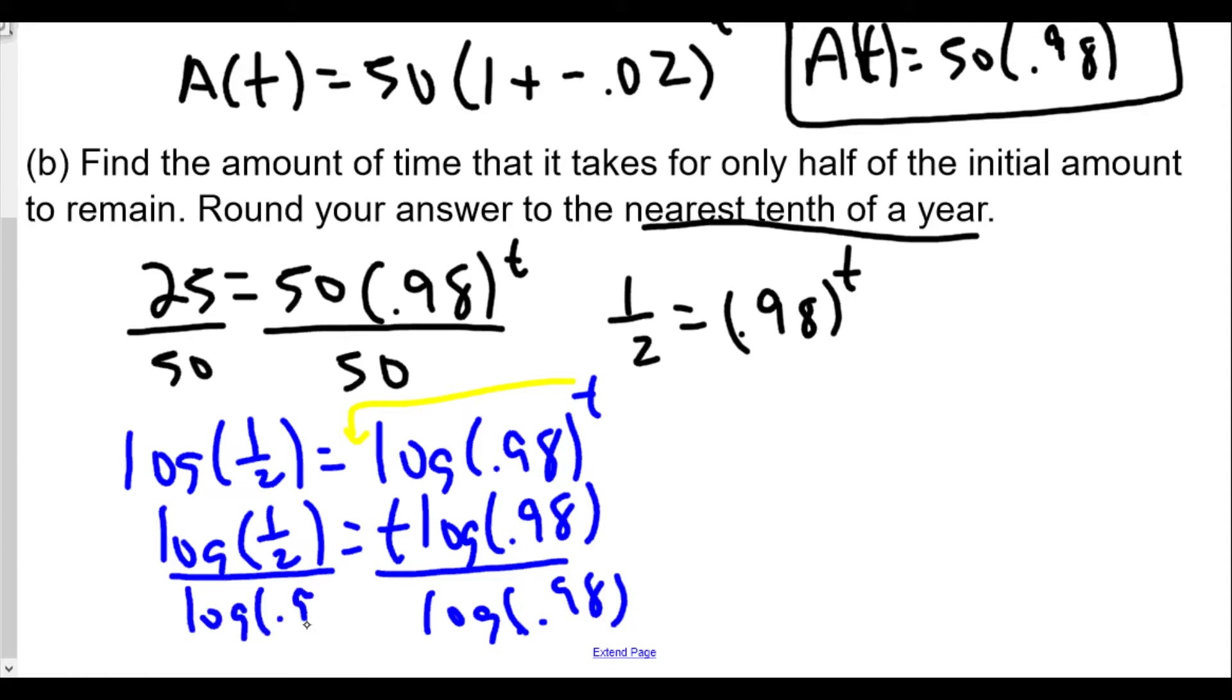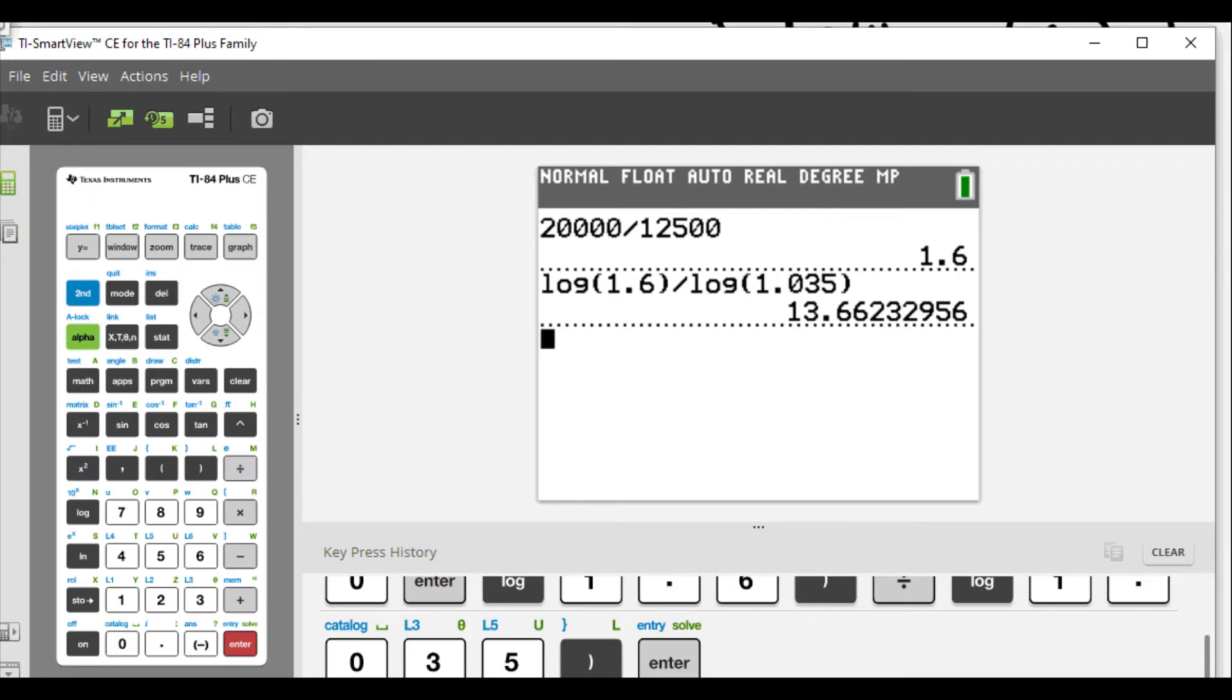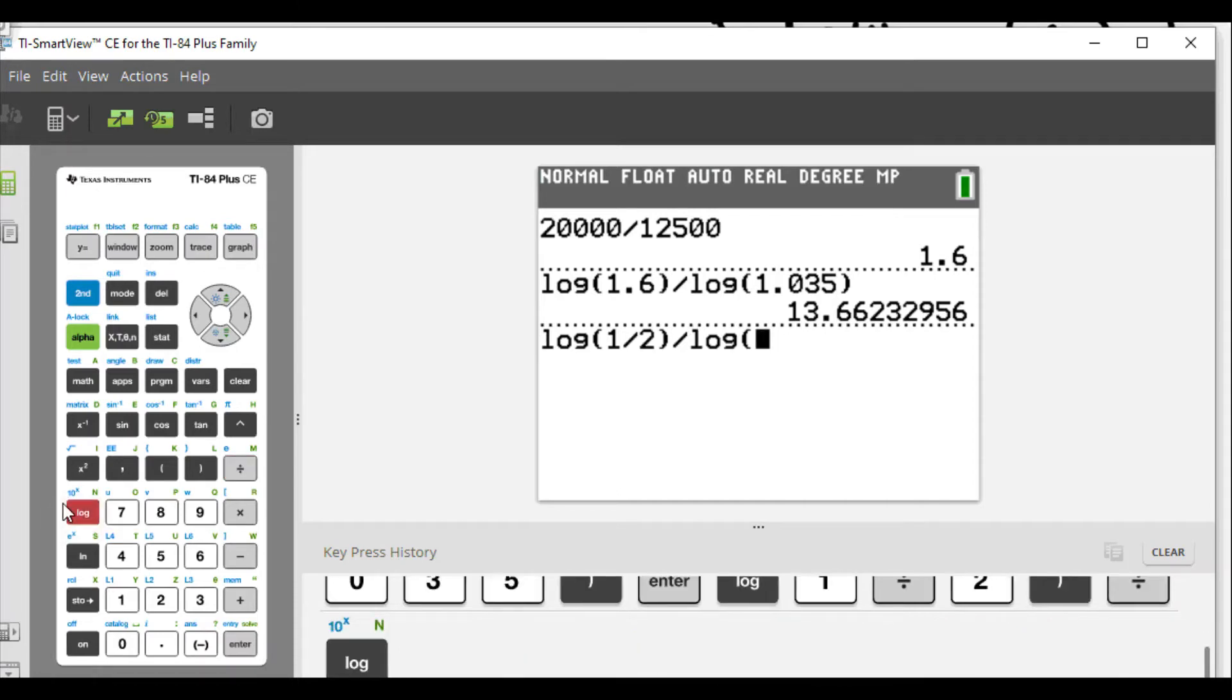So divide both sides by this. And these are real numbers: log of 1 half and log of 0.98, these are real numbers. So let's take a look here. We have log of 1 half, log of 1 divided by 2, and divide by the log of 0.98.